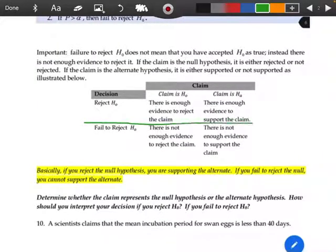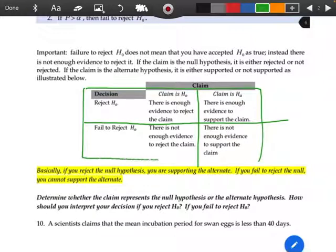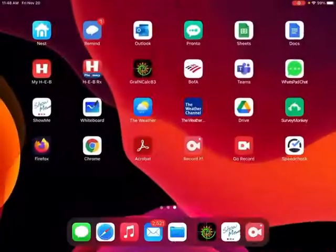And let me just try to make this a little bit so that it's easier to see. Here we go. Okay, our claim was our null, right? And we found the fail-to-reject region, so we're going to say there is not enough evidence to reject the claim.